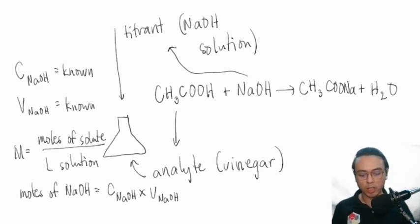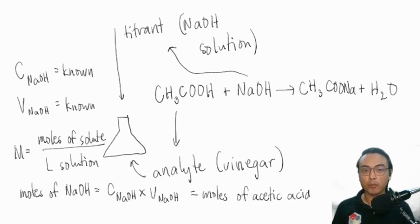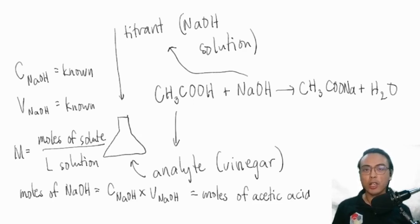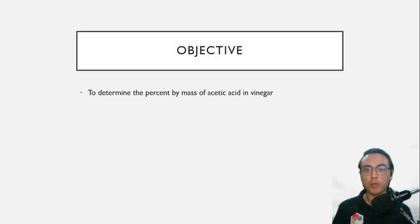The number of moles of sodium hydroxide can be related to the number of moles of acetic acid through stoichiometry. Looking at the balanced equation, sodium hydroxide and acetic acid exist in a 1:1 ratio, meaning the moles of sodium hydroxide equal the moles of acetic acid in the vinegar sample. When you know how much acetic acid is in your sample, you can convert moles to mass and then calculate the percentage by mass of acetic acid in the vinegar.